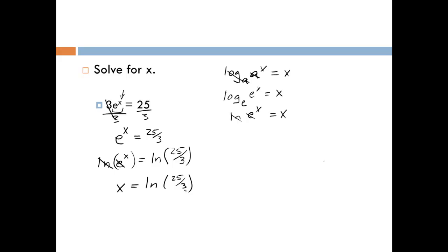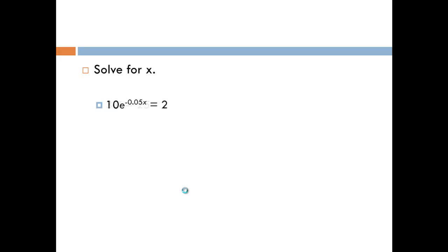If you wanted to see that in decimal form, you can just type that into your calculator. This next example is very similar: we have 10 times e to the negative 0.05x is equal to 2. Again, to solve for x we need to get the entire exponential term by itself, so we first divide both sides of the equation by 10. The left side cancels, and we're left with e to the negative 0.05x is equal to 0.2.